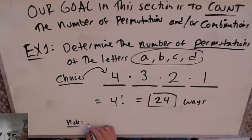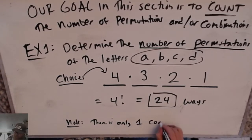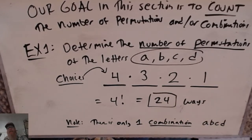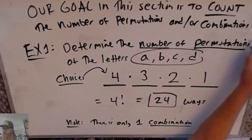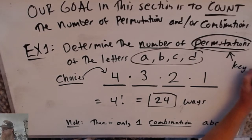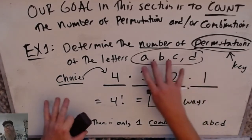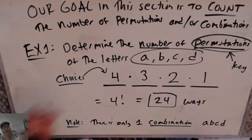Note: if I would have said combination, there is only one combination — A B C D — and every permutation is equivalent to this one combination. The key word here is permutation. If I asked how many combinations are there of four letters, there's really only one — A B C D — because it doesn't matter what order you pick them in.